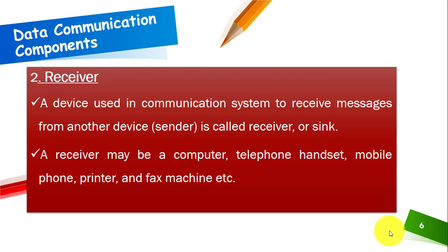A receiver is a device used in a communication system to receive messages from another device. It is also called a sink. For example, suppose there are two devices — Device A and Device B. Device A sends data and Device B receives data, so Device A is the sender or transmitter, and Device B is the receiver or sink. A receiver may be a computer, telephone handset, mobile phone, printer, or fax machine.